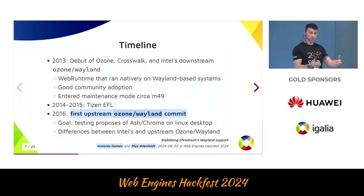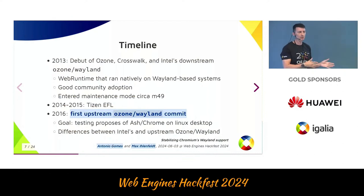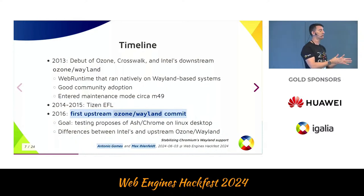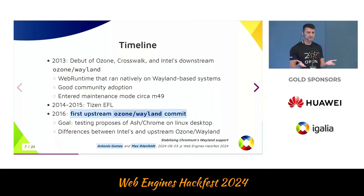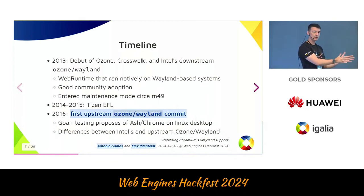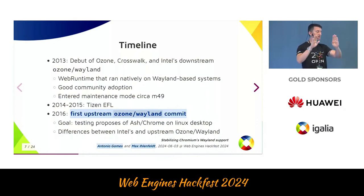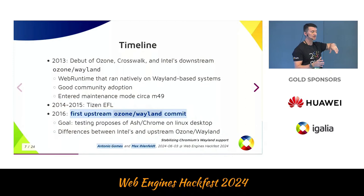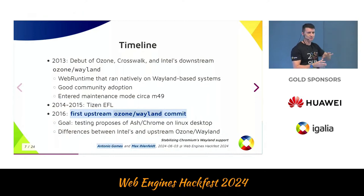One of those projects was the so-called Tizen operating system, primarily developed by Samsung already in 2014 and 2015. Tizen also ran on top of a different windowing toolkit, EFL. So they took what Intel had originally, forked it, and kept developing. We already had two implementations going side by side — one being run by Intel, the other by the Tizen folks. But eventually, both projects entered a kind of maintenance mode or community-driven effort mode circa 2015 and 2016.